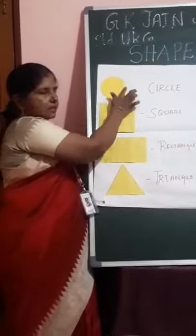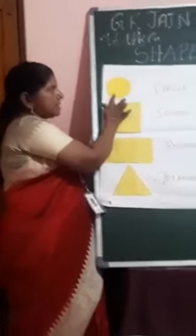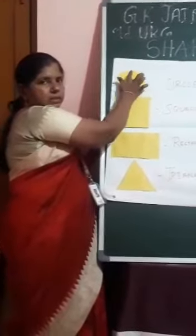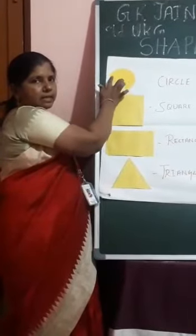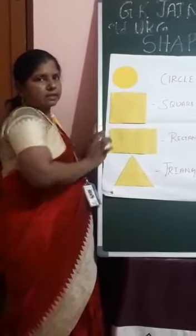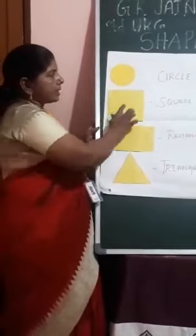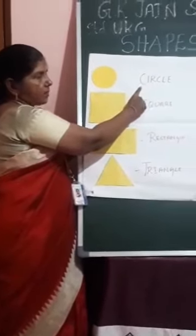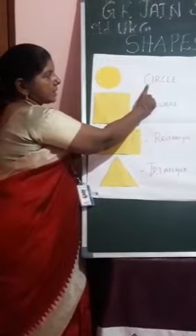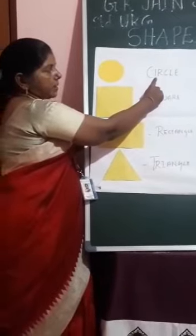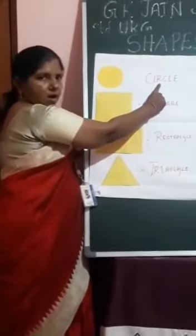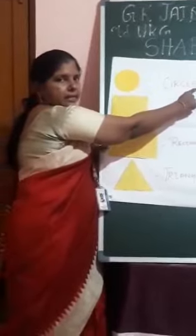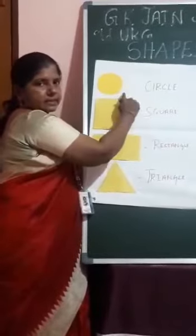What is this? Circle. Circle has no sides and corners. Tell out the spelling of circle. Look at the board and say loudly: C-I-R-C-L-E. Circle.